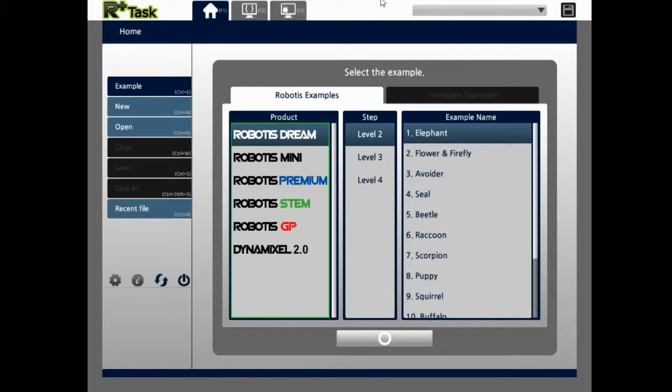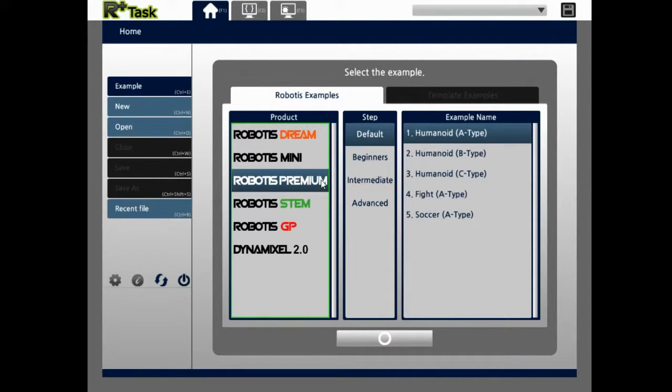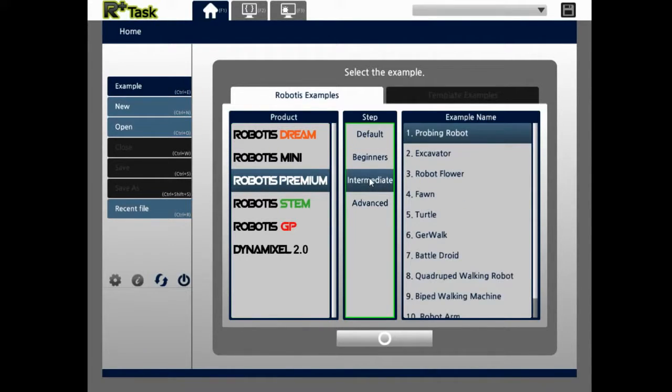This is R-plus Task. Again, we want to just simply select the premium kit, click intermediate, and open up the GerWalk example. Press OK.